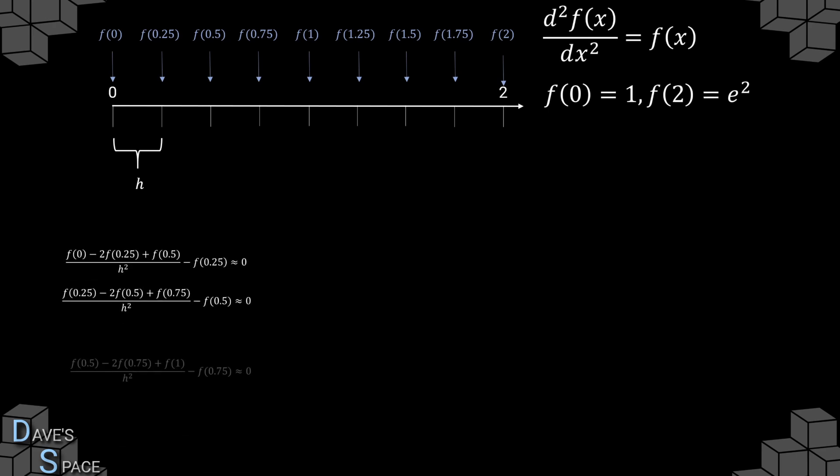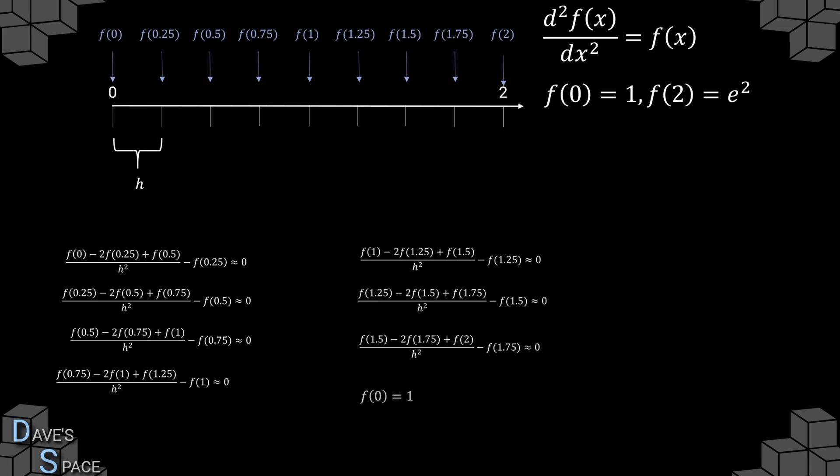This then led to seven equations for the nine grid points, with the remaining two equations coming from the boundary conditions. This led to a total of nine linear equations for nine unknowns, which is the function evaluated at f0, f0.25, and so on.